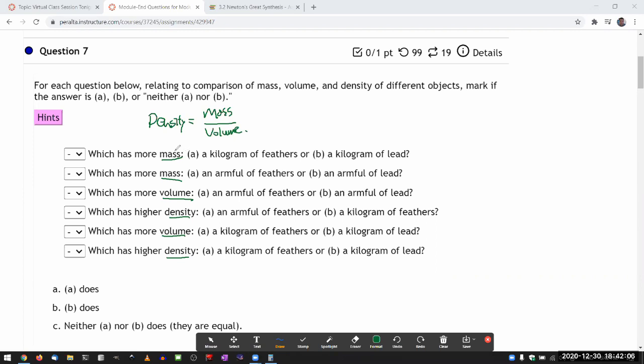So like the first question here, it's asking which has more mass, and the amount of things that are specified are already specified in terms of mass. Kilogram is a unit of mass. So a kilogram of feathers, or a kilogram of lead, they both have a kilogram, so neither, they are both equal.